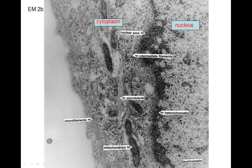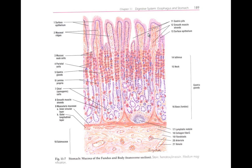We can see another one of those cells. Here's the nucleus with the heterochromatin. This is a cross-section of the nuclear pores - there's a nuclear pore here and here. We can't see where the membrane is because we're cutting it on face, cutting it perpendicular to the typical view of the membrane.